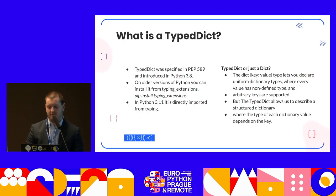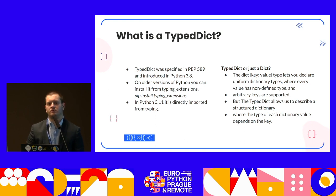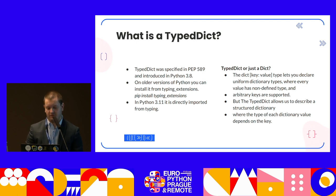TypedDict was specified in PEP 589 and introduced in Python 3.8. On all versions before 3.11, you can install it from typing_extensions — in other words, pip install typing_extensions. In Python 3.11, it's directly imported from typing, so we can just use the typing library.